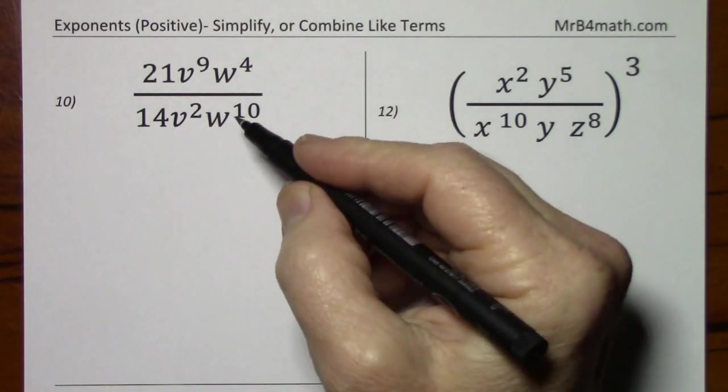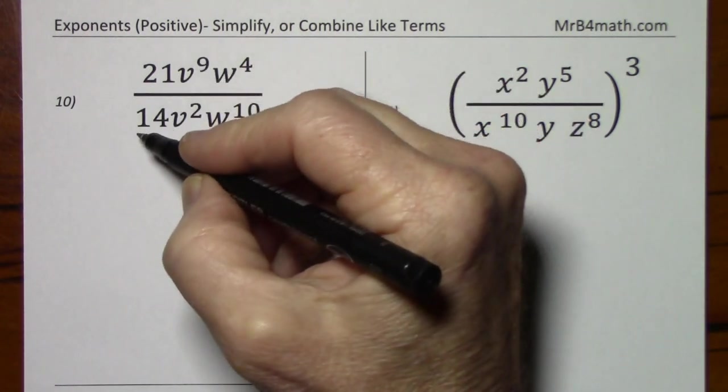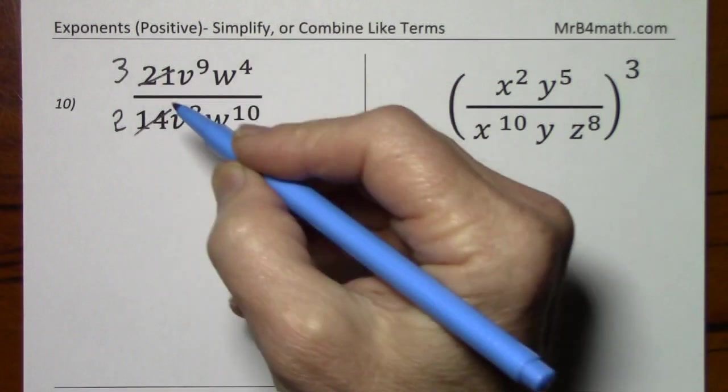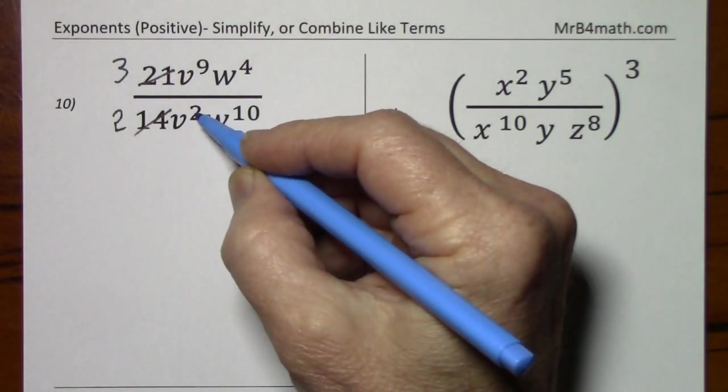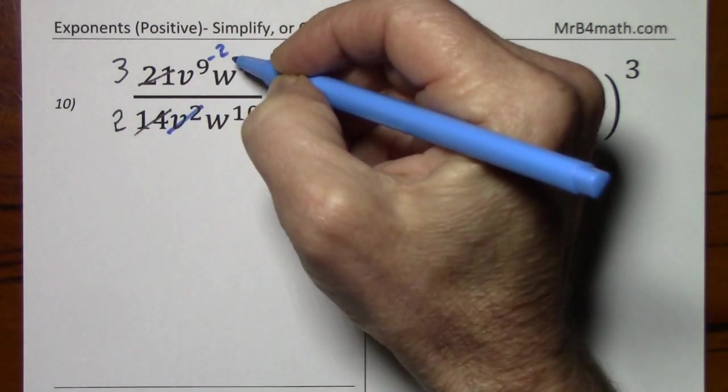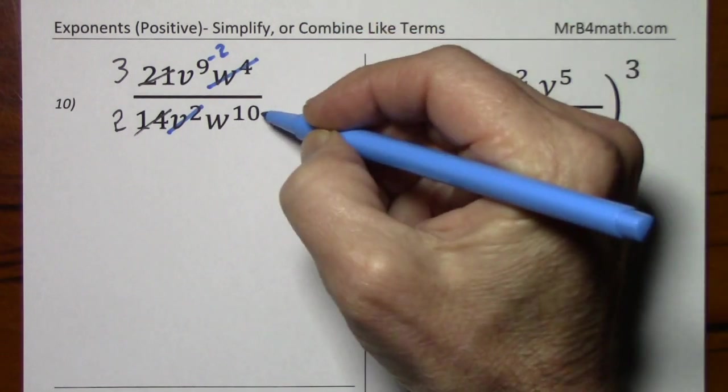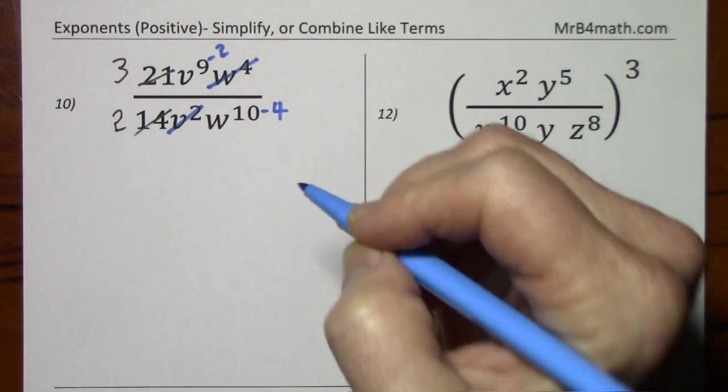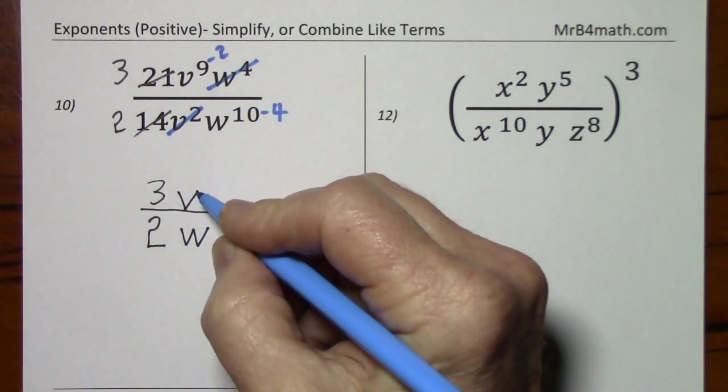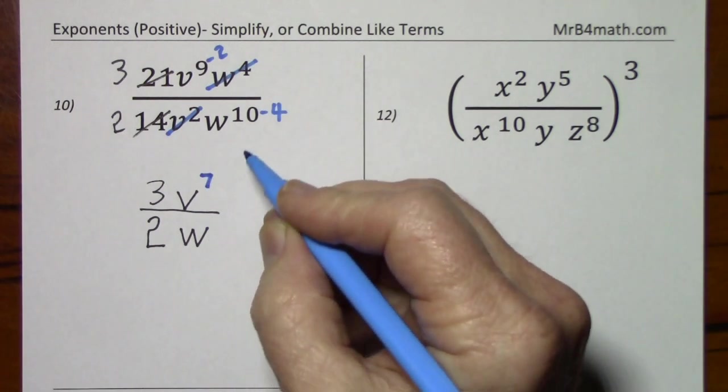Looking at number 10, we can simplify this directly. So with 14 and 21, the GCF is 7, divide by 7, divide by 7. With the v's, the 2 is the smaller exponent, so we can cancel this out completely, so long as we subtract 2 from 9. And with the w's, we can cancel this out completely, so long as we subtract 4 from 10. This will leave us with 3v to the 7th over 2w to the 6th.